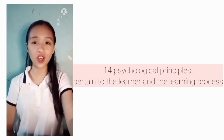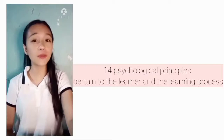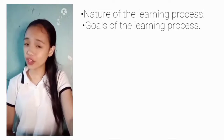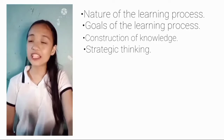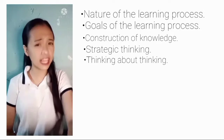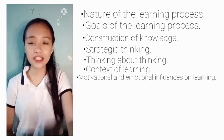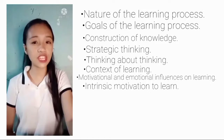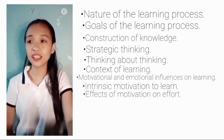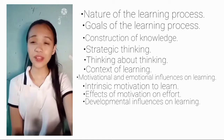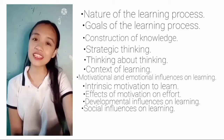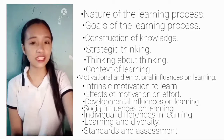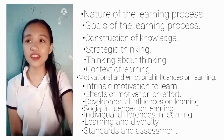I will share the following fourteen psychological principles pertaining to the learner and the learning process. First, nature of the learning process. Second, goals of the learning process. Third, construction of knowledge. Fourth, strategic thinking. Fifth, thinking about thinking. Sixth, context of learning. Seventh, motivational and emotional influences on learning. Eighth, intrinsic motivation to learn. Ninth, effects of motivation on effort. Tenth, developmental influences on learning. Eleventh, social influences on learning. Twelfth, individual differences in learning. Thirteenth, learning and diversity. And fourteenth, standards and assessment.